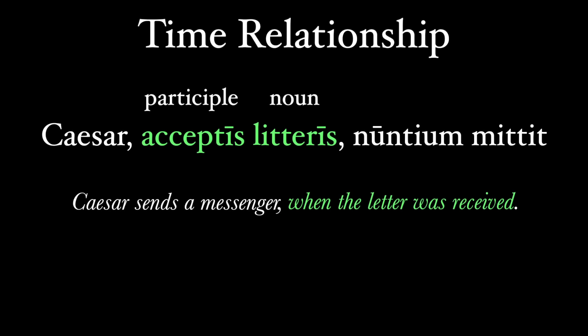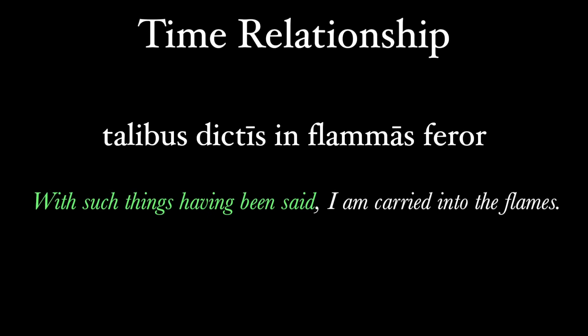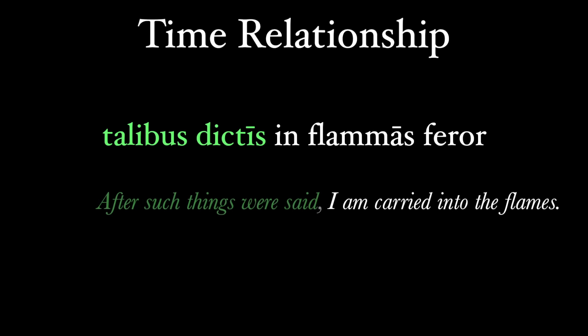But sometimes it is possible to translate a passive participle actively. Here's another example: 'Talibus dictis, in flammas feror' — 'With such things having been said, I am carried into the flames.' 'Talibus dictis' is our ablative absolute, but here the word 'talibus' takes the place of a noun, meaning 'with such things,' and 'dictis' is our ablative perfect participle. The words were said before I went into the flames, and we can translate it better as 'after such things were said' or 'when such things were said.'